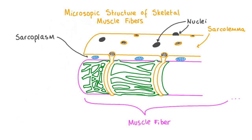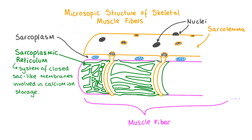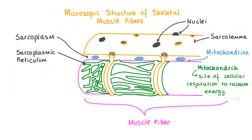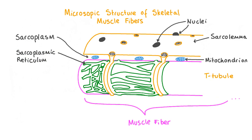The cytoplasm within a muscle fiber is called the sarcoplasm. Muscle fibers contain a specialized endoplasmic reticulum called the sarcoplasmic reticulum, which extends throughout the muscle fiber and contains calcium ions needed to initiate muscle contraction. Muscle cells require a large amount of energy when they contract, so they also contain many mitochondria — the site of cellular respiration — to release the energy needed for muscular contraction. Parts of the sarcolemma fold inwards to form structures called transverse or T-tubules, which allow an impulse arriving from a motor neuron to spread along the whole muscle fiber so that all cells contract simultaneously.